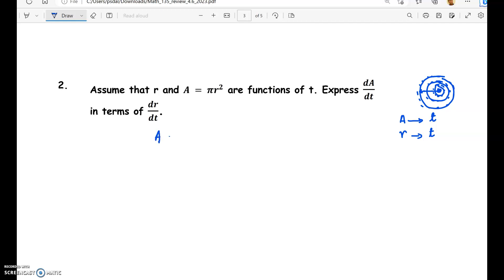So we have area equals pi r squared. Now it says express dA by dt in terms of dr by dt. Notice that both A and r are functions of time.